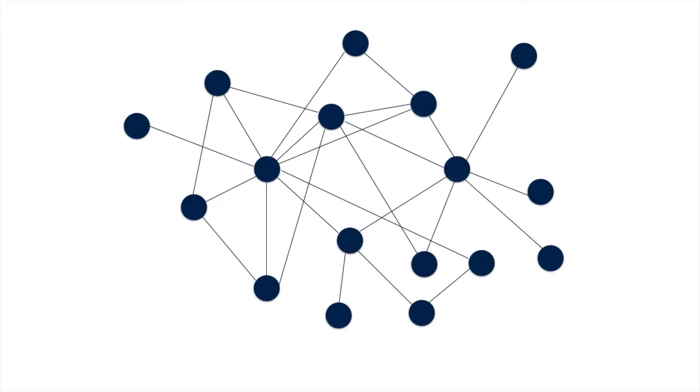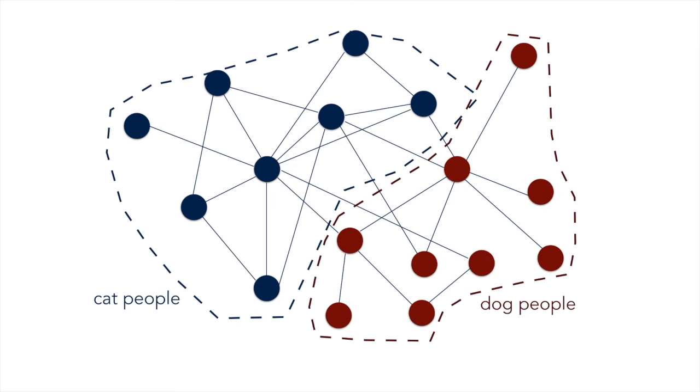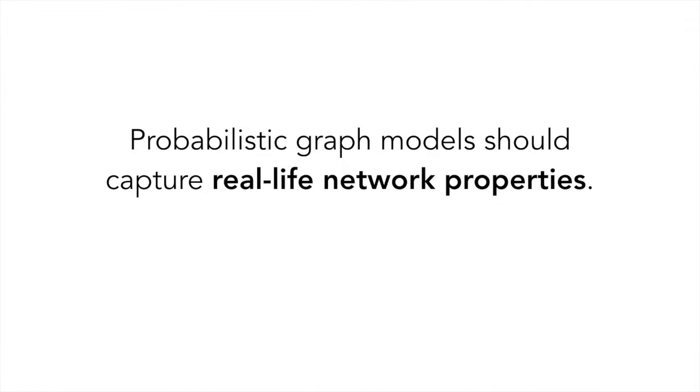Probabilistic modeling allows us to infer graph properties, like community structure, and quantify uncertainty. However, the efficacy of probabilistic modeling relies on capturing real-life data properties. For one,